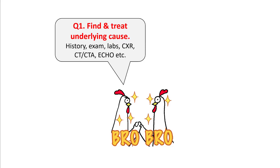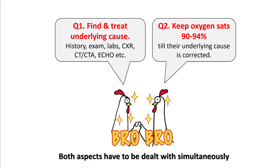There are two aspects to evaluating a hypoxemic patient. First is figuring out the underlying cause and treating it. Second is to keep the oxygen saturation around 90 to 94% until the underlying cause is corrected. Both aspects have to be dealt with simultaneously.